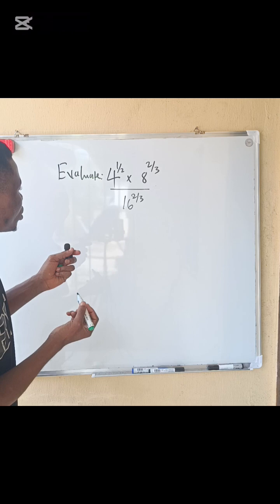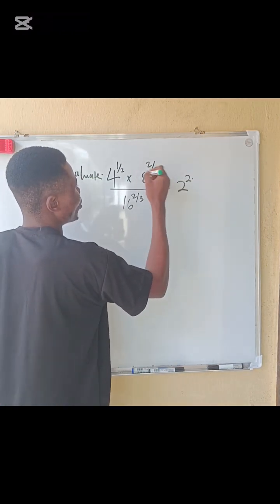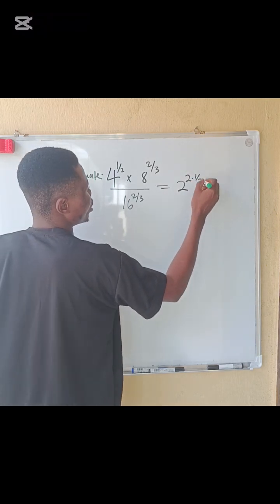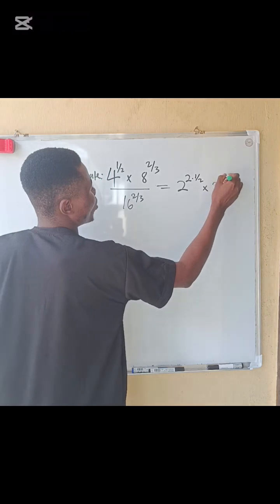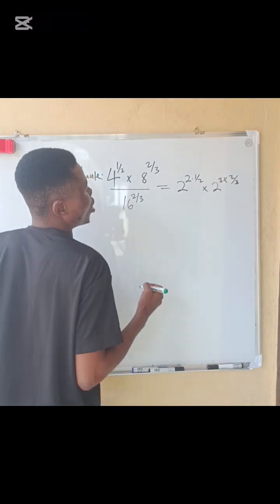From here we can reduce 4 to 2 power 2, right, then multiply by the power 1 over 2. Multiply by 8, we can reduce it to 2 power 3 multiplied by 2 power 2 over 3.